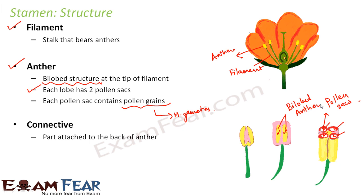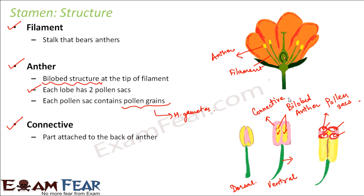There are two views of the stamen shown here. This one is the ventral look — when you look at it from the front, the stamen looks like this. From the back, the pink colored structure is not really seen much and you only see the two lobes. The pink color is a connective tissue that connects the two lobes of the anther. So the three parts are: the filament, the anthers, and the connective which joins the two lobes. Inside the anther are the pollen sacs, and inside those are the pollen grains.